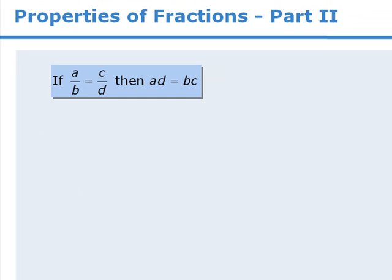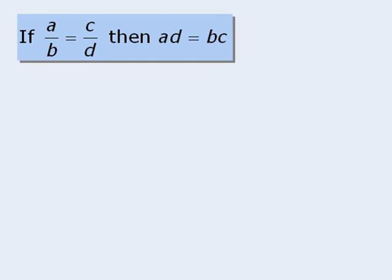Alright, our last property looks like this. If some fraction, a over b, is equal to another fraction, c over d, then it must be true that a times d is equal to b times c.